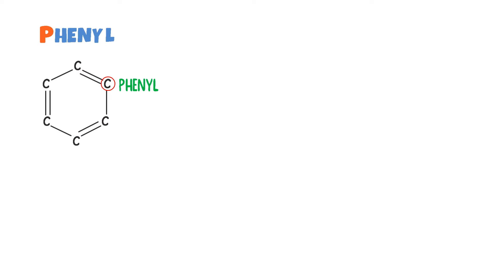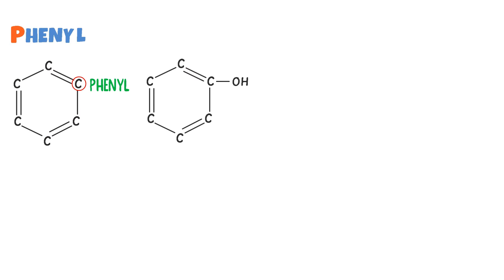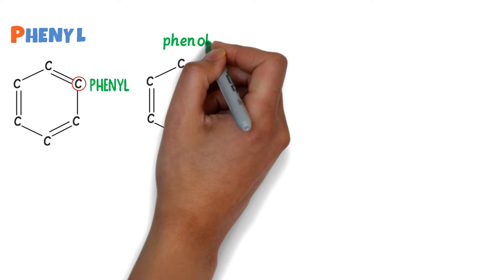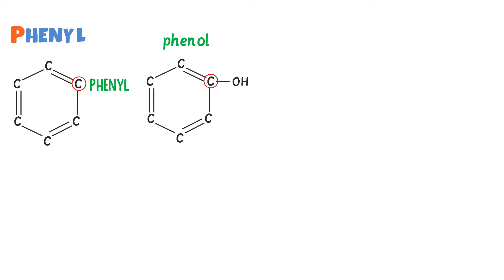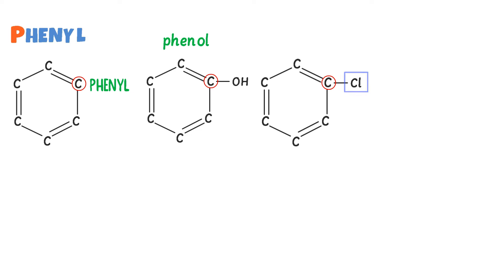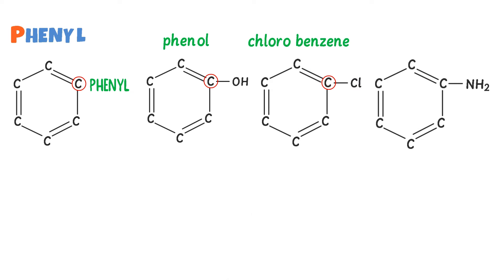For example, consider this organic compound — the functional group OH is bonded to the Phenyl carbon. For the Phenyl ring I write 'Phen', for OH I write 'ol', so I get Phenol. Remember that in the case of Phenyl, we do not write Phenyl alcohol. Secondly, consider this organic compound — this is the Phenyl carbon and the chloride functional group is attached to it, so it is Chlorobenzene. Thirdly, consider this organic compound — the NH₂ functional group is bonded to the Phenyl carbon, so it is known as Aniline.